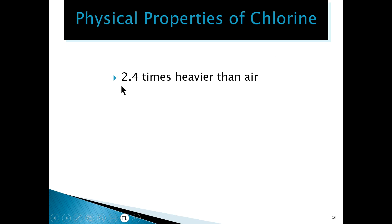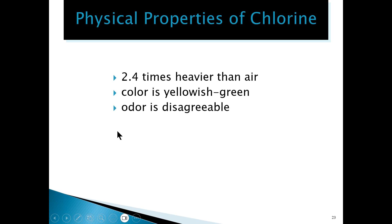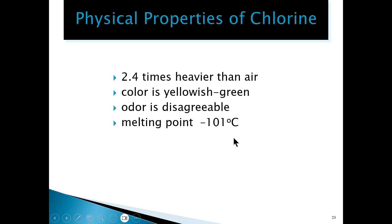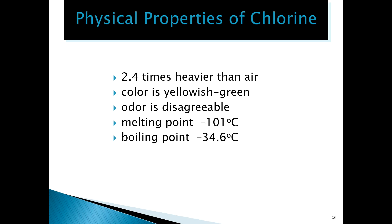For example, looking at chlorine: it is 2.4 times heavier than air, it has a yellowish-green color, a disagreeable odor, a melting point of minus 101 degrees Celsius, and a boiling point of minus 34.6 degrees Celsius. These characteristics can all be observed without chlorine undergoing any chemical reaction.